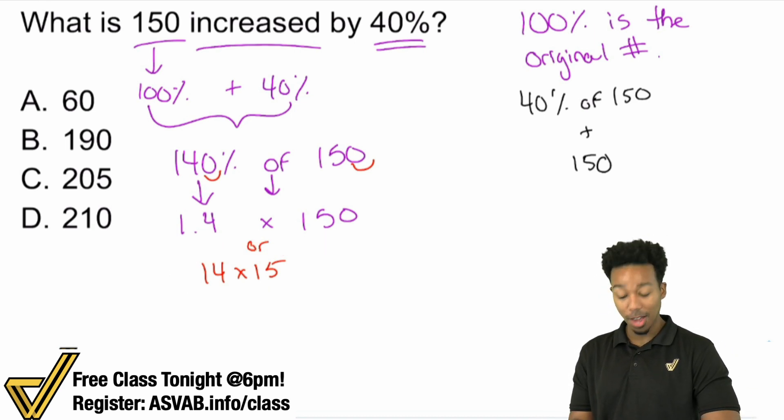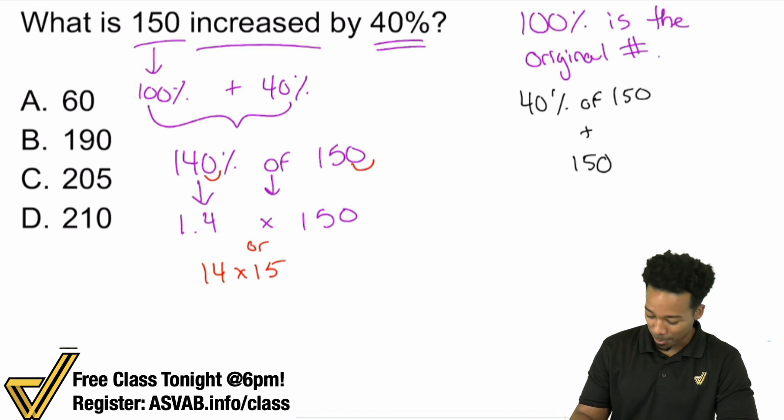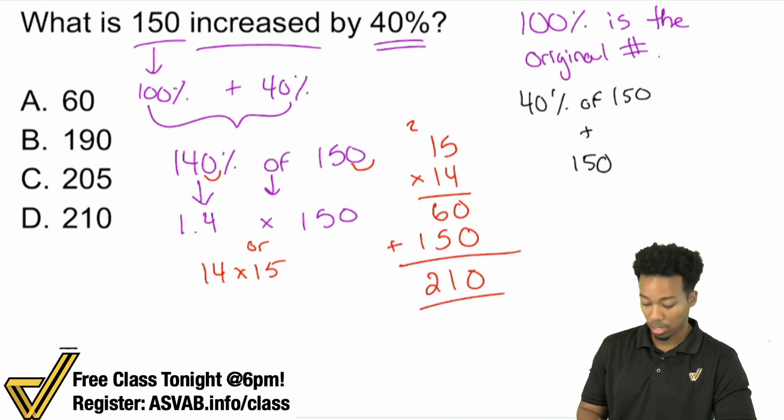You calculate it that way, and you tell me. So here we go. 15 times 14. This will be super straightforward. 5 times 4 is 20. 1 times 4 is 4. Carry that 2. You get 6. Bring a 0 down. 15 times 1. That's going to be 15. Add these together and you get yourself 210. And there's your answer.